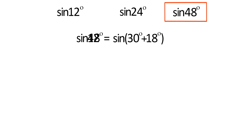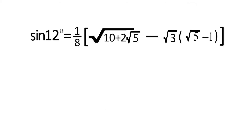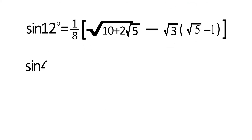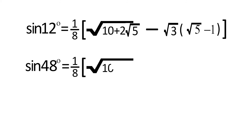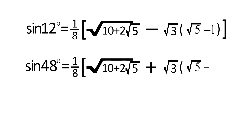Now sin 48 degrees equals sin(30 degrees plus 18 degrees). We just replace minus with plus and we get our answer. So sin 48 degrees equals (1/8) times (√(10 + 2√5) plus √3 times (√5 minus 1)).